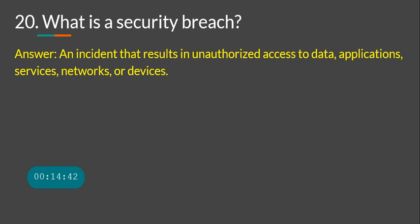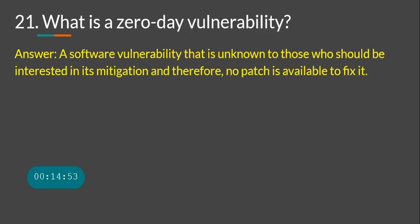What is a security breach? A security breach is an incident that results in unauthorized access to data, applications, services, networks, or devices. What is a zero-day vulnerability? It means a vulnerability has been discovered but the vendor has no patch for it yet. There is a gap from when the vulnerability is known — often with exploit code available on GitHub — until the vendor releases a fix.